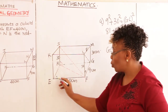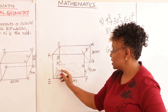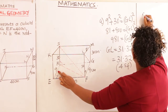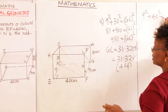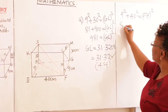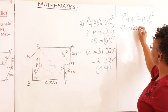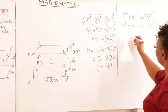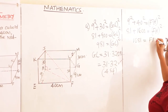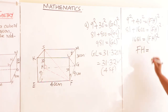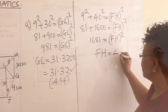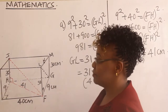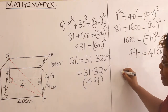To find the base diagonal FH, we use Pythagoras' theorem. The base has sides 9 and 40, so: 9 squared plus 40 squared equals FH squared. That is 81 plus 1600, which gives 1681 equals FH squared. Finding the square root using a calculator gives FH equals 41 centimeters.